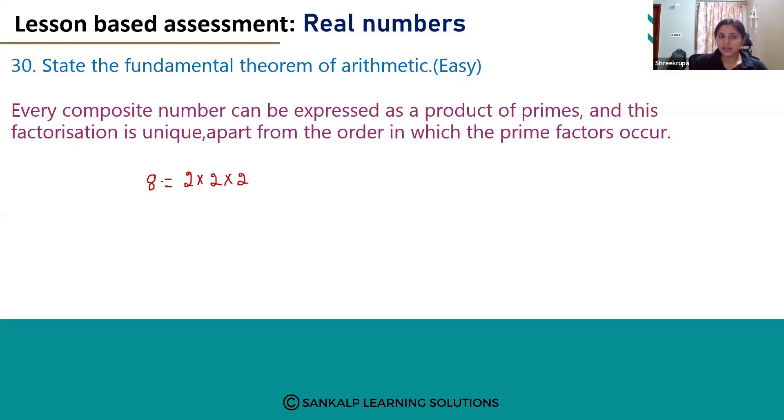So 8 can be written as a product of prime numbers. Similarly, if you take any other number, for example 12, we can divide this using prime numbers. The prime factors will be 2 into 2 which becomes 4, and 4 into 3 we will get 12.